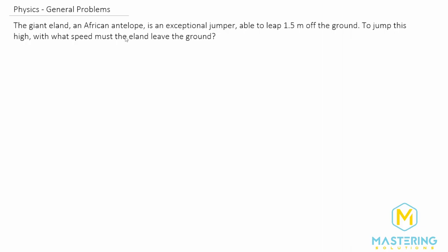In this one they tell us that this African antelope is a good jumper and it's able to leap 1.5 meters off the ground. So we say this whole distance is 1.5 meters. And they say to jump that high, how fast did it have to leave the ground? Obviously we don't have to solve for that as we just talked about.